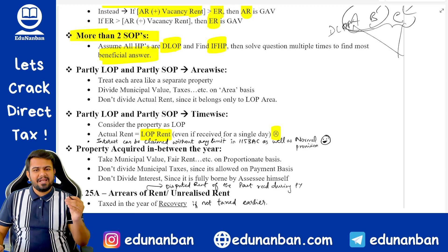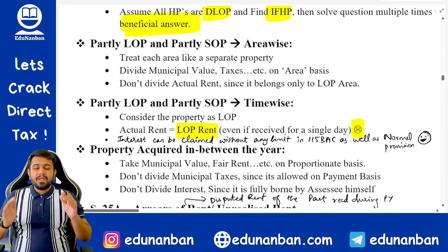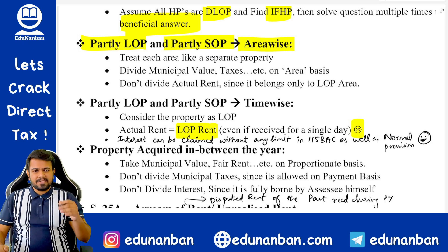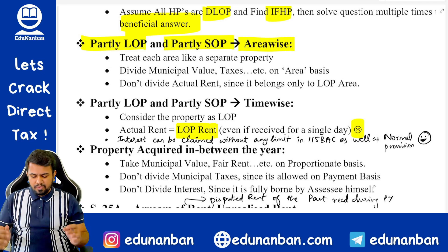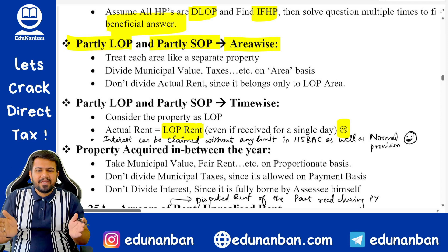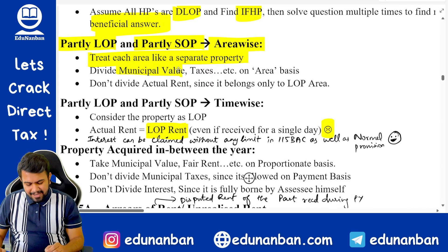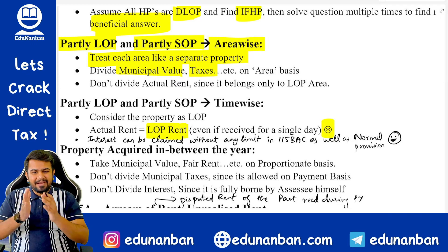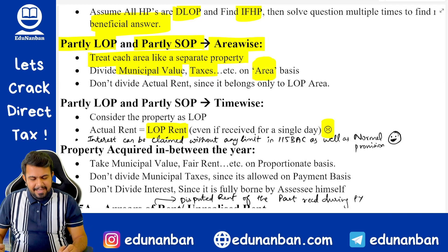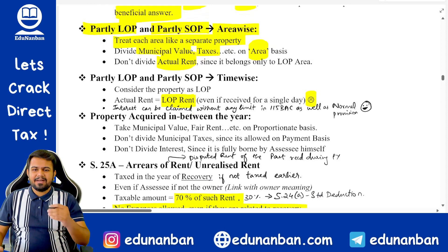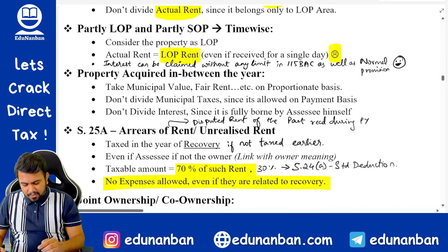If a property is partly let out and partly self-occupied area-wise — for example, one floor given on rent and one floor self-occupied — treat both floors as separate house properties. Divide the municipal value, municipal taxes, fair rent, and standard rent on an area basis. But do not divide the actual rent because actual rent is only for the rented portion.